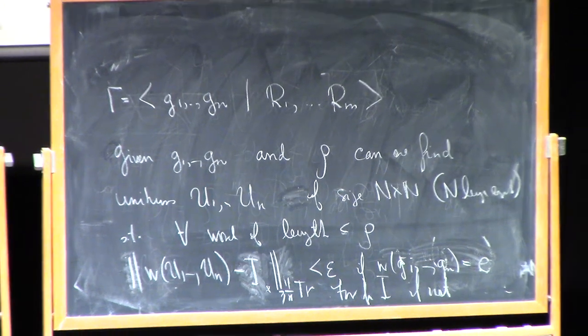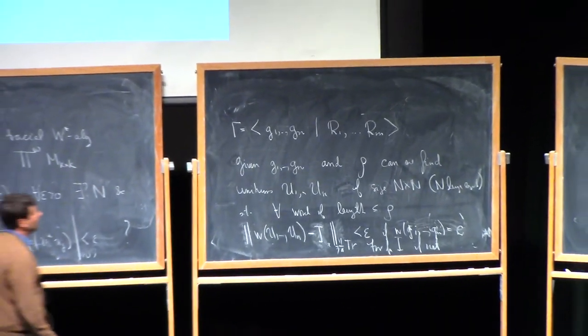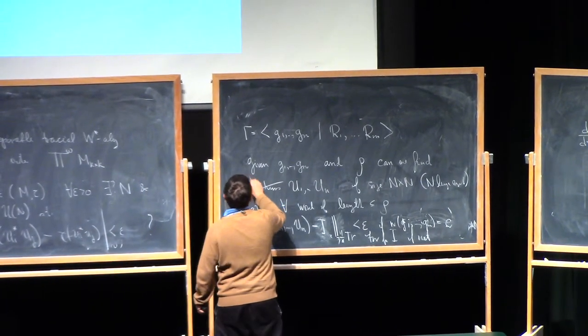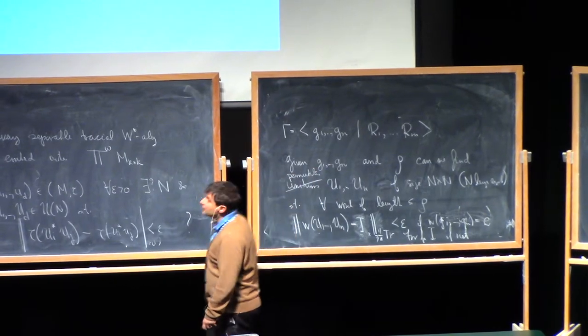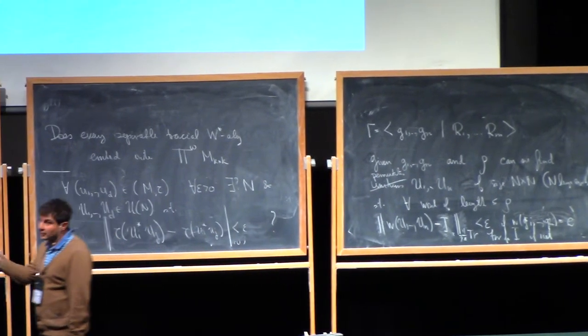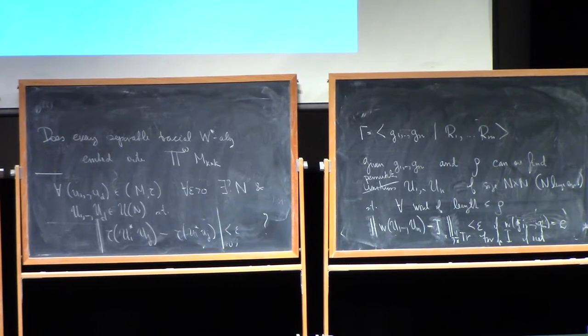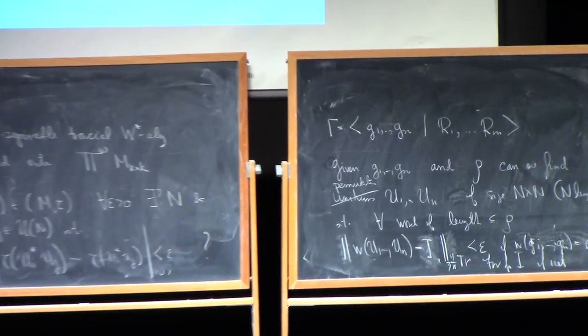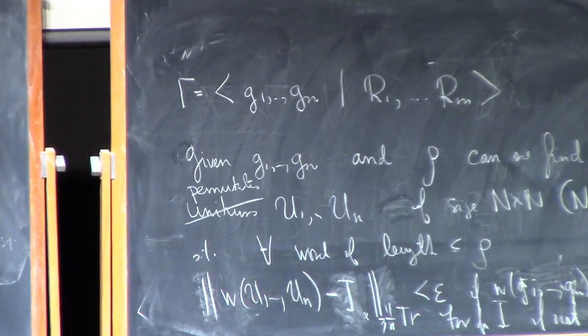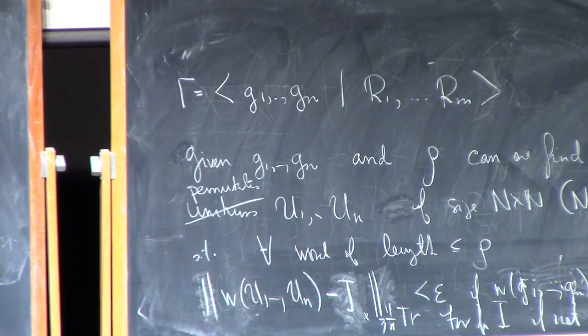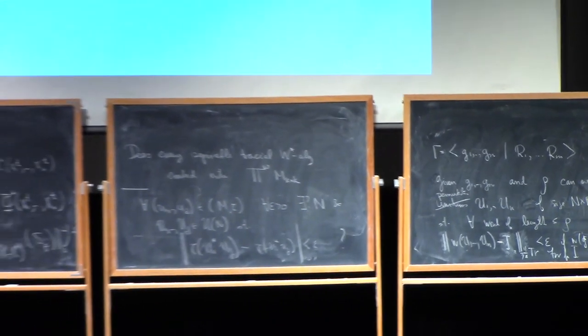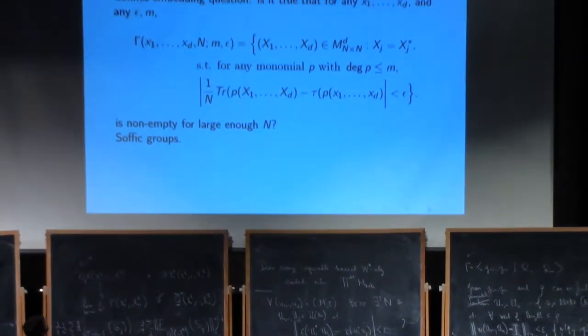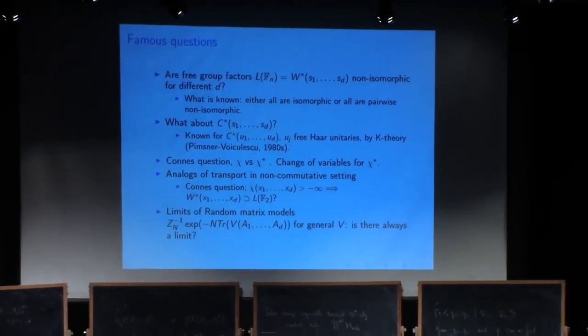So I just want to be able to embed the group into the unitary group approximately so that all my relations up to some length are satisfied and nothing more. Okay and there's a similar question where you replace unitaries by permutation matrices and groups that have that property are called sophic groups and one of the open questions is whether every group is sophic. So can you embed it in this way into permutations and it's a question seems to be related to the Connes question. Certainly if every group were sophic it would have to satisfy the Connes question. So that's unfortunately a big problem.